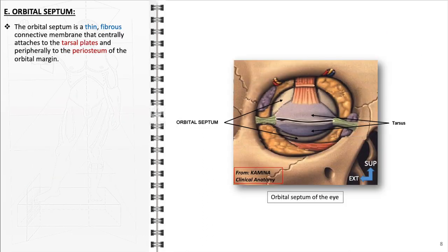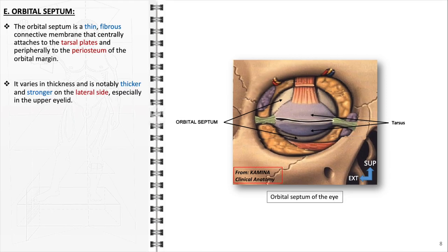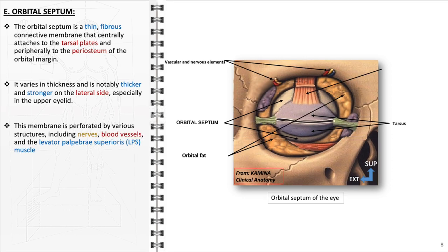The orbital septum is a thin yet robust fibrous connective membrane nestled within the eyelid. It exhibits a central attachment to the tarsal plates, which provide structural support to the eyelids, and extends peripherally to connect with the periosteum of the orbital margin. Anatomically, the septum varies in thickness, being notably thicker and more robust on the lateral side, particularly in the upper eyelid. The membrane is interspersed with numerous perforations, which allow for the passage of critical structures such as nerves, blood vessels, and the levator palpebri superioris (LPS) muscle.